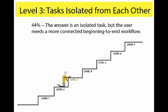Level three: tasks are isolated from each other. The answer is an isolated task but the user needs a more connected beginning-to-end workflow. Leah Gurin gives a great example: on your phone guide, there's a topic on how to answer a call and another on how to look up contacts — but where's the topic that explains how to look up contacts while you're on a call? Which is what everybody needs. When someone asks for a number and you're pushing buttons trying to access contacts, that's the need for tasks that you do together, not discrete things done at separate individual times.